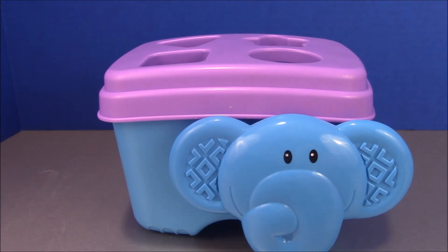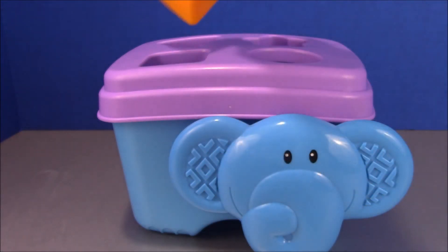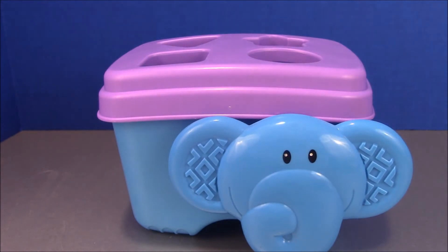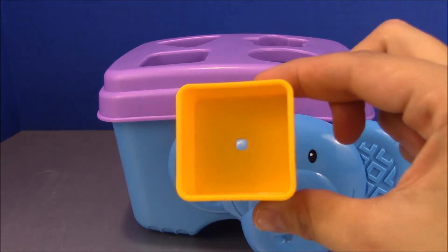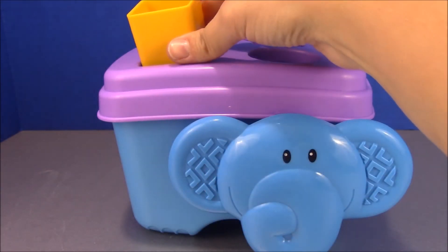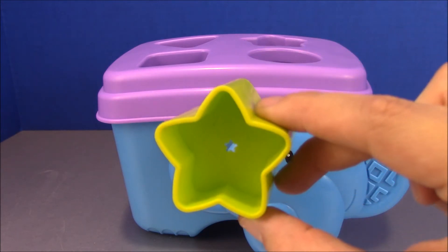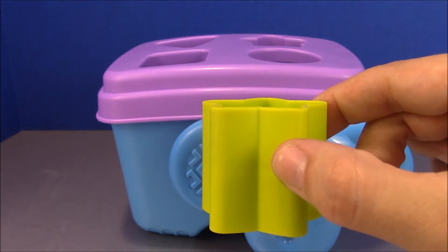Next we have an orange triangle. Here we have a yellow square. And lastly we have a green star.